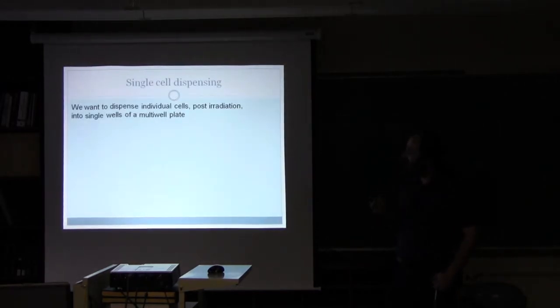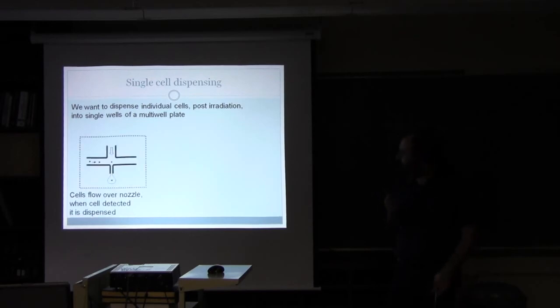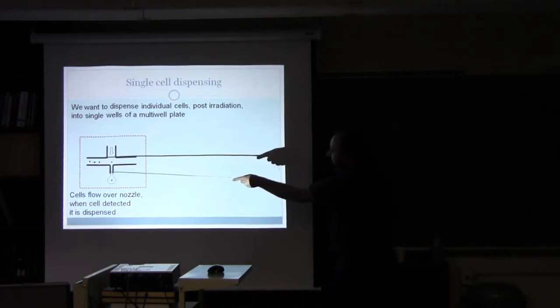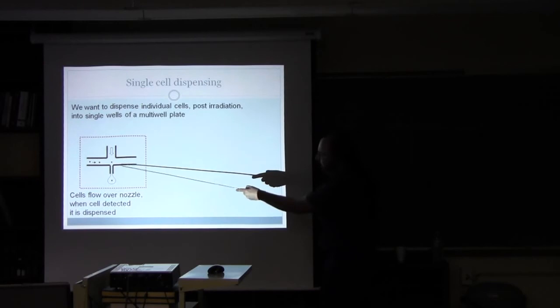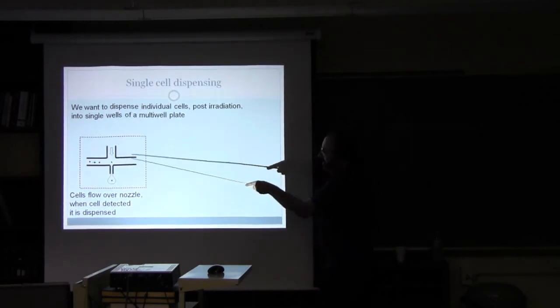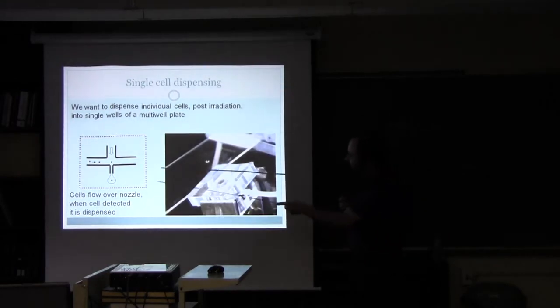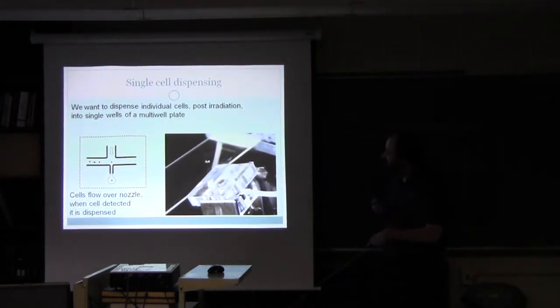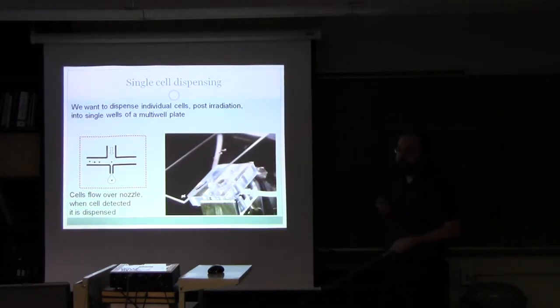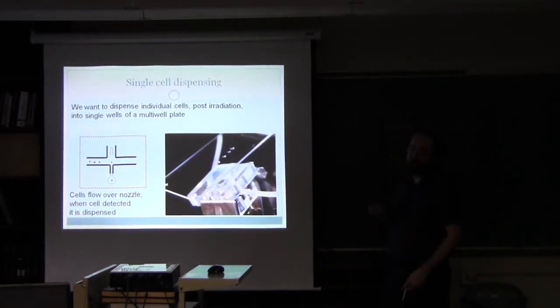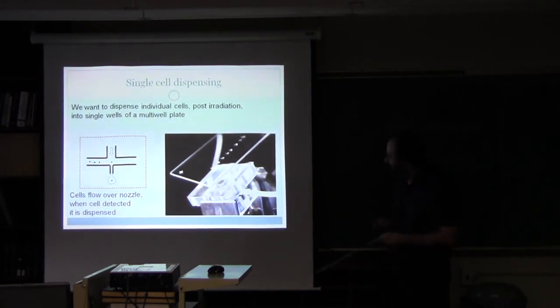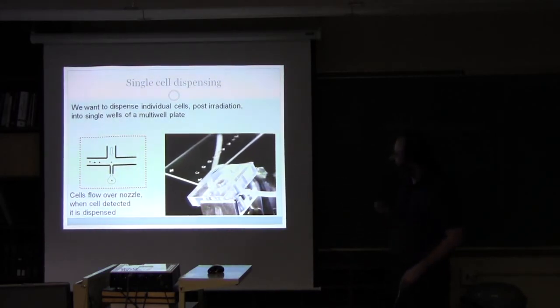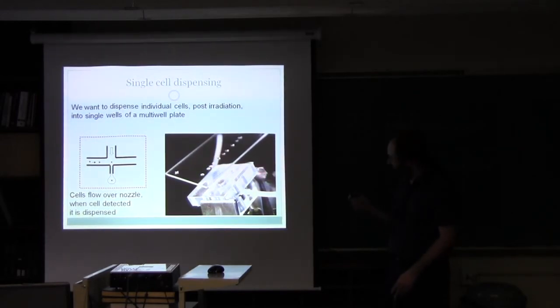Now to dispense cells into multi-well plates, one of the things you have to be very careful about, especially for PCR, is not to get a lot of medium in. The technology or the system we're using has a channel here where the cells can flow. When you detect a cell above this nozzle, you can apply a short burst of pressure. This will generate a small droplet that can be dispensed in this case on a slide. You can see these are really very small drops. So you don't have a lot of medium confounding your gene expression assay. We're doing this on a slide here so you can see it, but we're developing a system for multi-well plates.